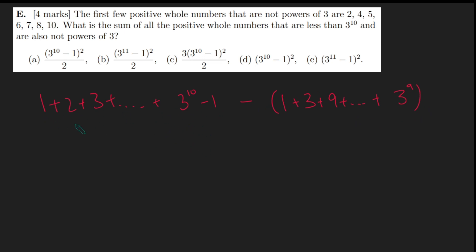Well, this thing here is just the sum of the first n natural numbers where n is 3 to the 10 minus 1. And there's a very nice formula for that. It's n times n plus 1 over 2. So this is going to equal 3 to the 10 minus 1 times 3 to the 10 over 2.